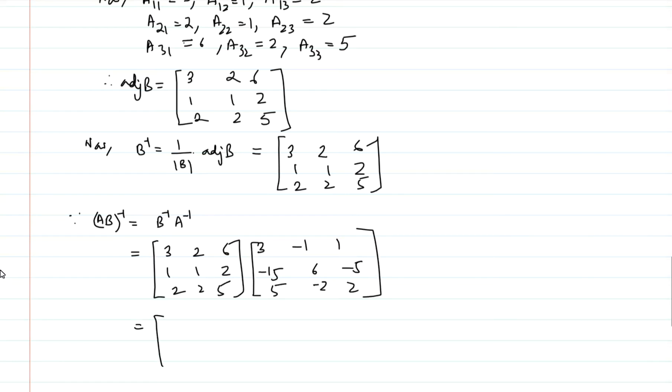Just multiply the two matrices, and in a very easy way you will be getting 9, 2, 4, 1, 1, 2, 2, 2, 5. So this is going to be the answer.